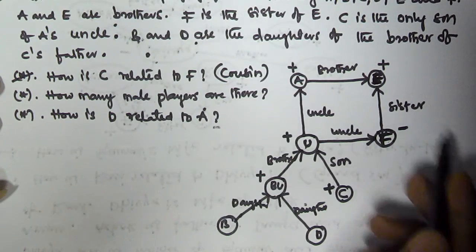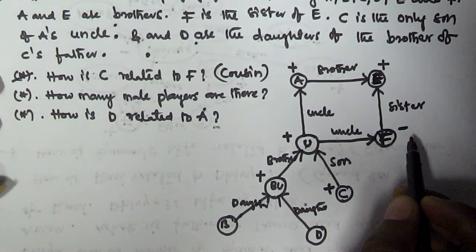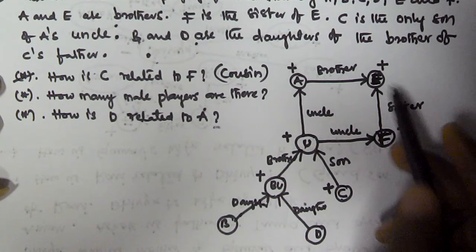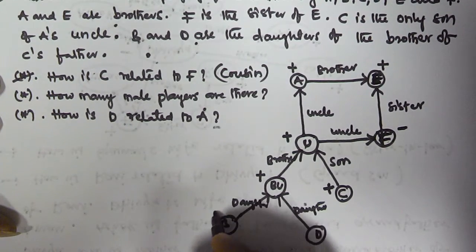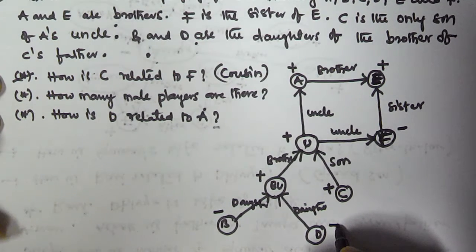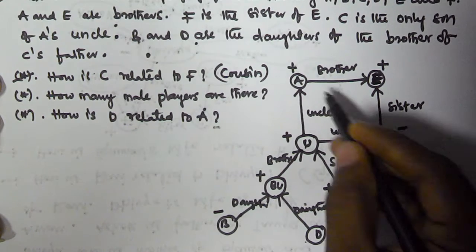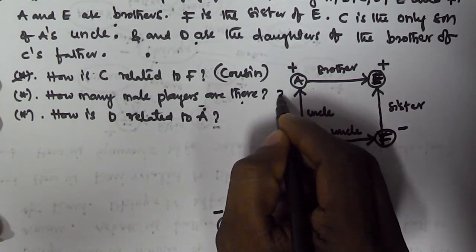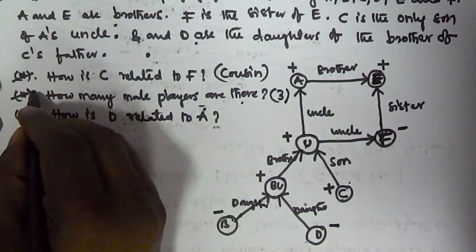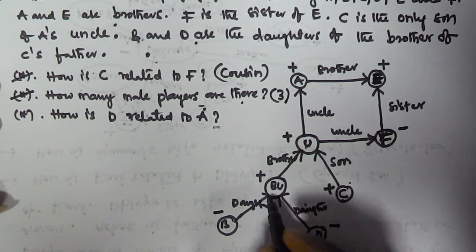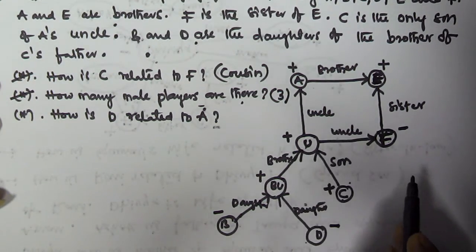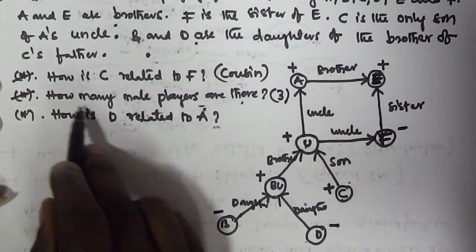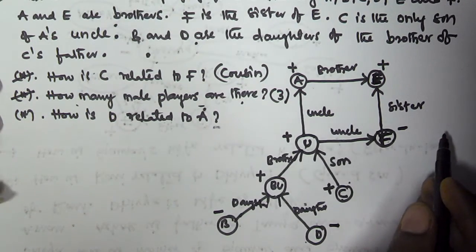How many male players are there? There are six children: A, B, C, D, E, F. A, E, and C are males; B, D, and F are females. So there are three male players. Note that U and BU are also male, but they are not playing the game, so we don't count them.